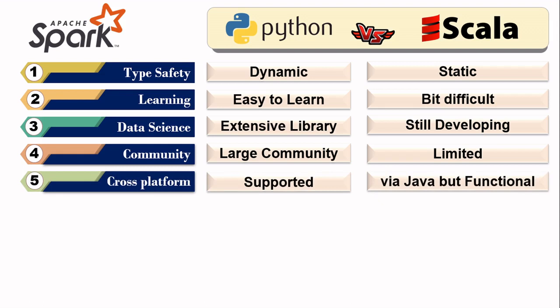For cross-platform support, Python can directly communicate with other programming languages like C and Java, via CPython and Jython. In Scala, you can achieve this through Java JDKs and functional programming modeling.